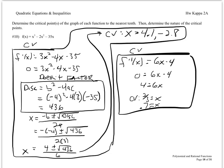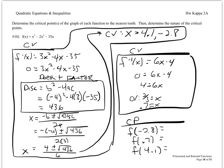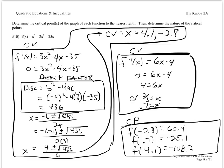So now we have three different critical values. To find the critical points, we take those critical values and plug them into the original function, putting them in ascending order from smallest to biggest: f of negative 2.8, f of 0.7, and f of 4.1. Using a calculator, we get 60.4, negative 25.1, and negative 108.2. Without doing any more work, we know that the first is a maximum, the second is the inflection point, and the third is the minimum.